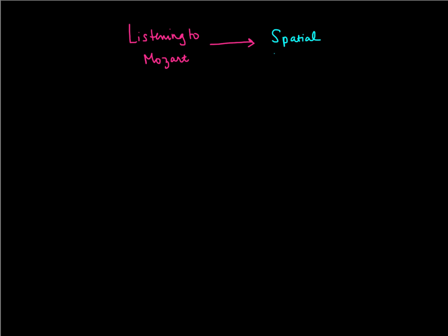Back in 1993, Rauscher and her colleagues reported a really influential study in the Journal of Science suggesting that listening to Mozart actually improves spatial reasoning. And so a whole bunch of researchers tried to figure out how does that work, or under what conditions does that work, or is this a real relationship?